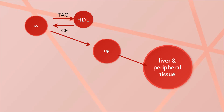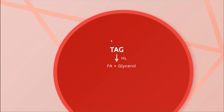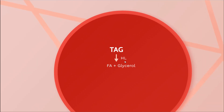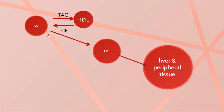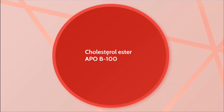IDL is rich in cholesterol but still contains some triacylglycerol. In the circulation, IDL receives cholesterol ester from HDL in exchange for triacylglycerol. The remaining triacylglycerol in IDL is then degraded by hepatic lipase into fatty acids and glycerol. With this change, IDL gradually transforms into LDL, which is rich in cholesterol ester and contains ApoB100.